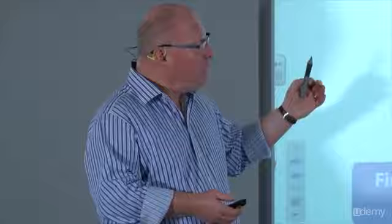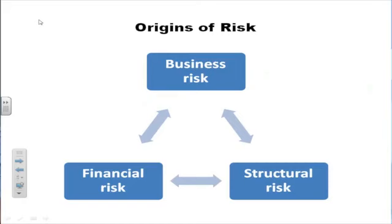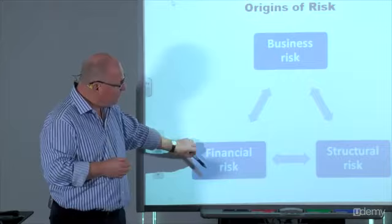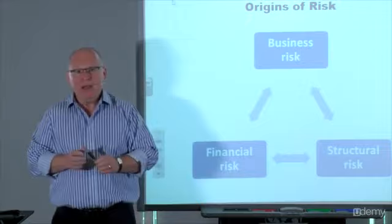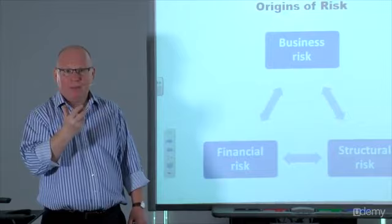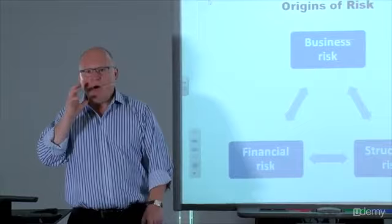If we look at risk itself, we can see that risk has three interrelated parts. The first part is the business risk. Then there is the financial risk. And then there is the structural risk. It is important that we realize at the outset that those risks do not operate in isolation — they have an interrelationship. So it is important that not only do we identify the risks themselves, but we are also clear on how those risks interrelate with each other.